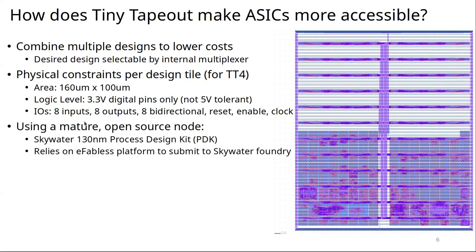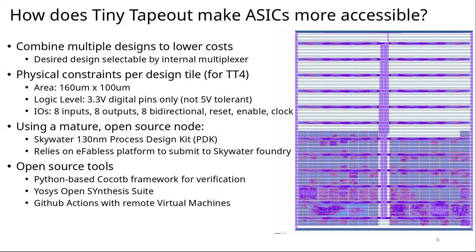They use the open-source SkyWater 130nm node. Today we talk about single-digit nanometers at the cutting edge, so 130nm is about two decades old. SkyWater open-sourced their Process Design Kit, which contains design rules, libraries, and node specifications. They rely on the eFabless platform for submission, use the cocotb framework to verify HDL designs, the OpenROAD synthesis tool, and everything can be run remotely using GitHub Actions so you don't have to worry about installing dependencies.